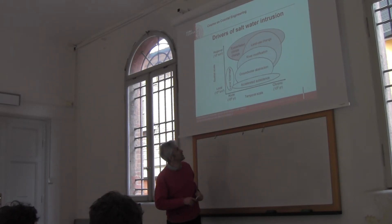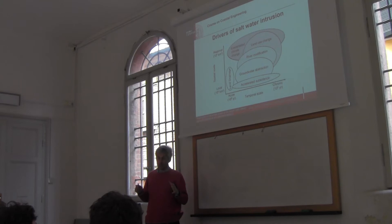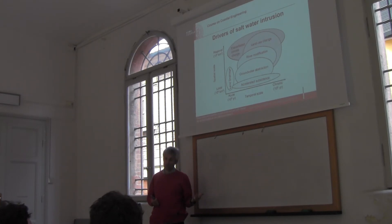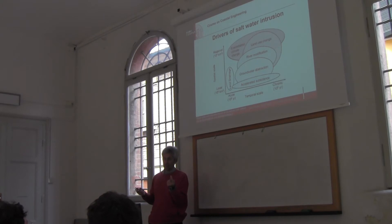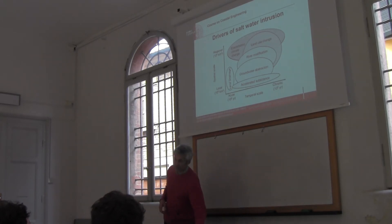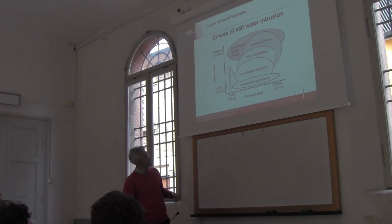Exacerbated climate change — what does it mean? At local scale, climate change can be exacerbated by, for instance, the urban heat island effect. In cities, it has been proved that temperature increased much more than in the overall land. And therefore, if you have increased temperature in urbanized areas, it affects also the saltwater intrusion.